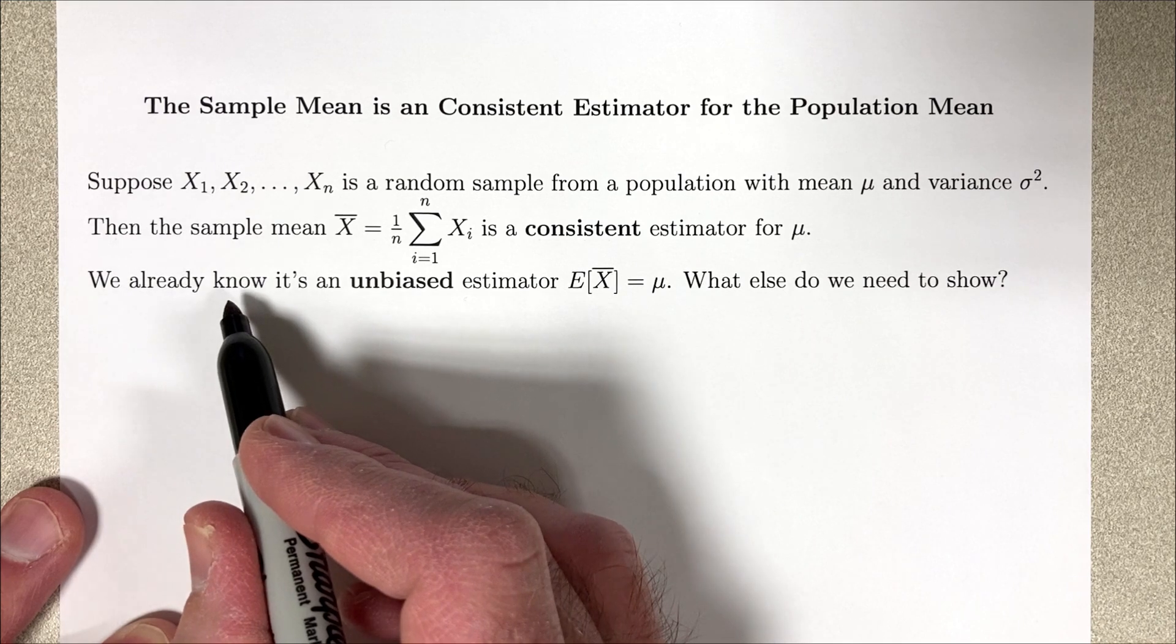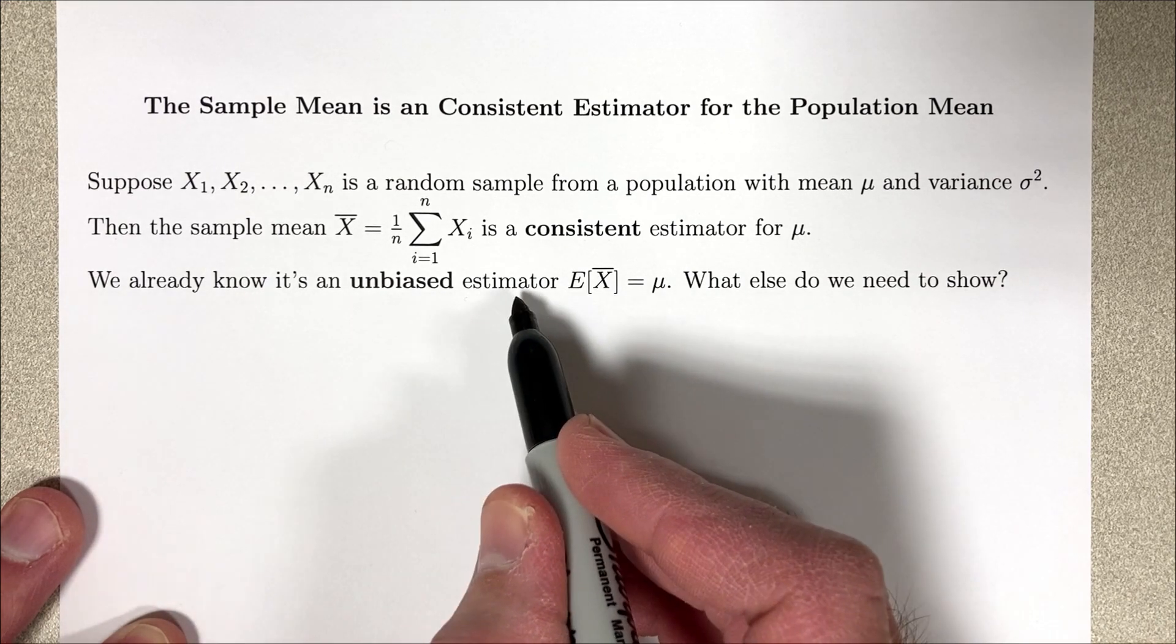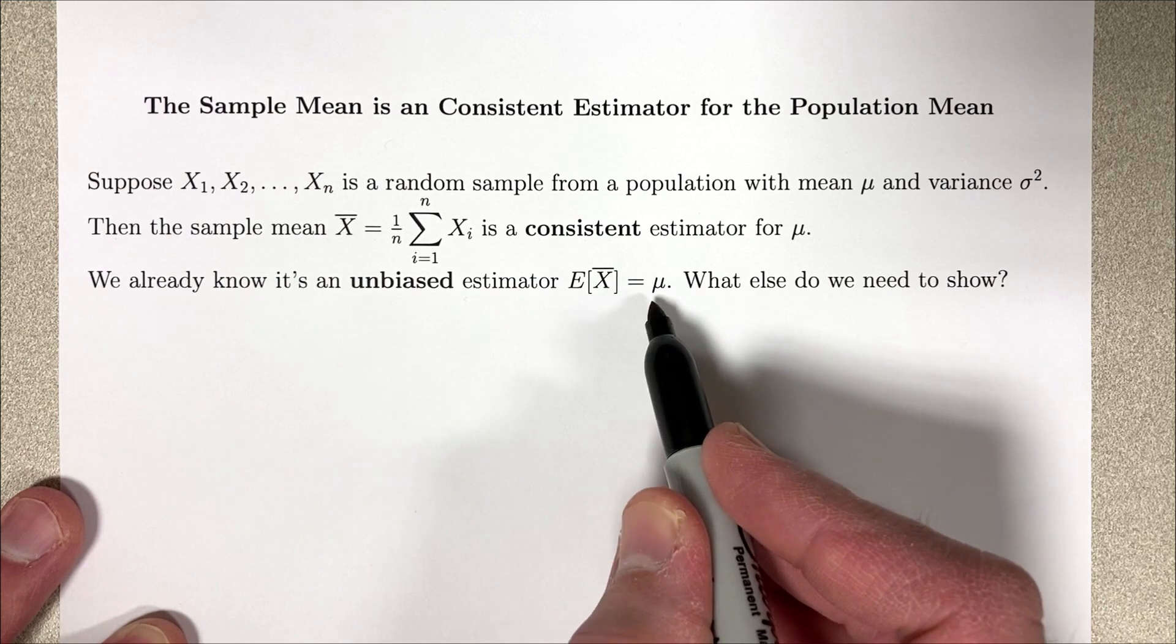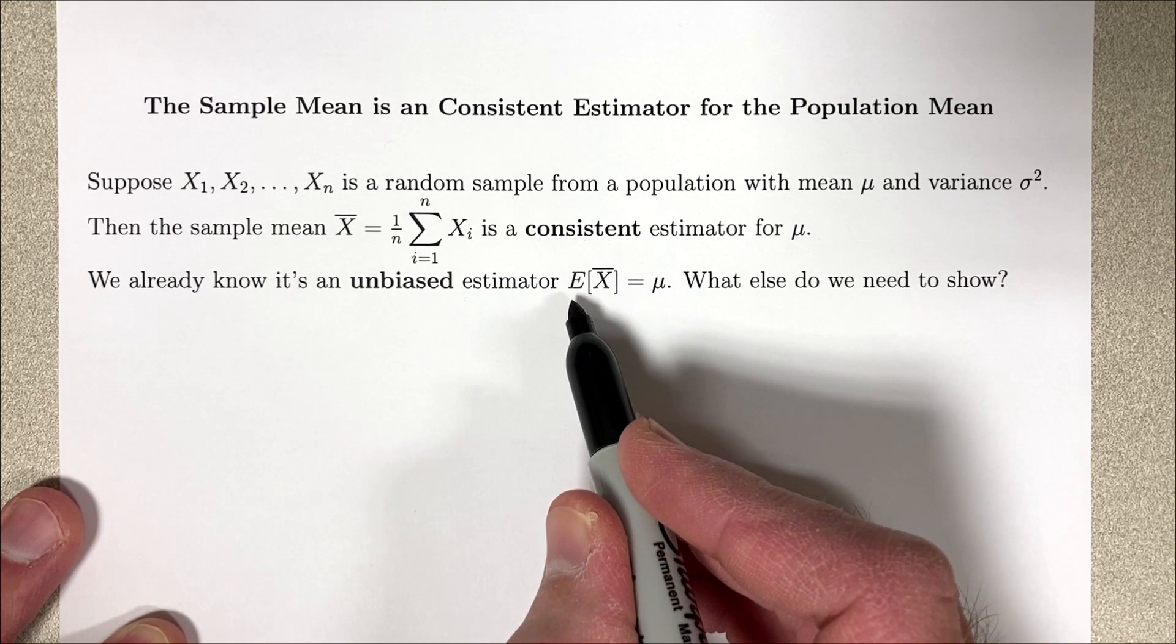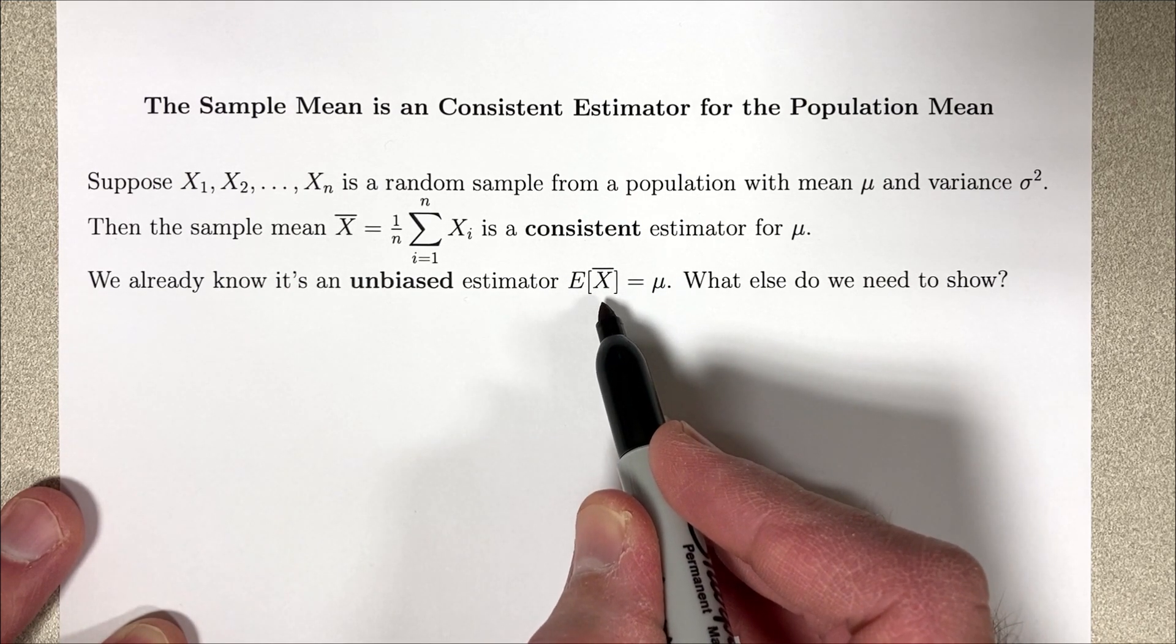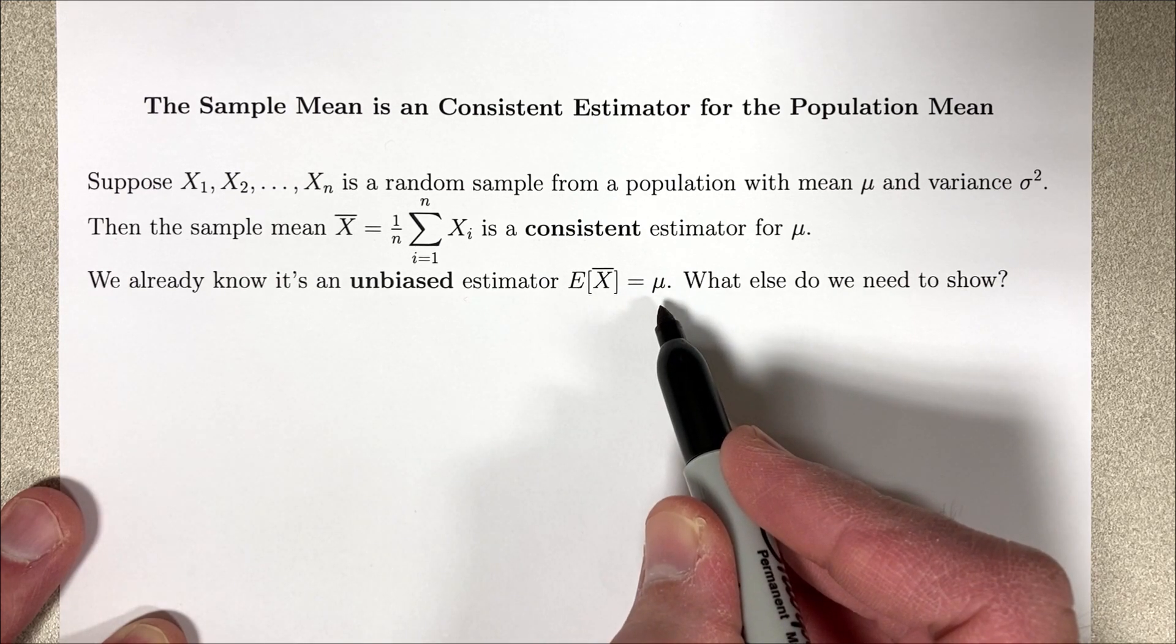We already know from a previous video that it's an unbiased estimator. The expected value of x-bar is mu. The mean, the theoretical mean of the random variable x-bar, which is a statistic, is equal to the population mean mu.